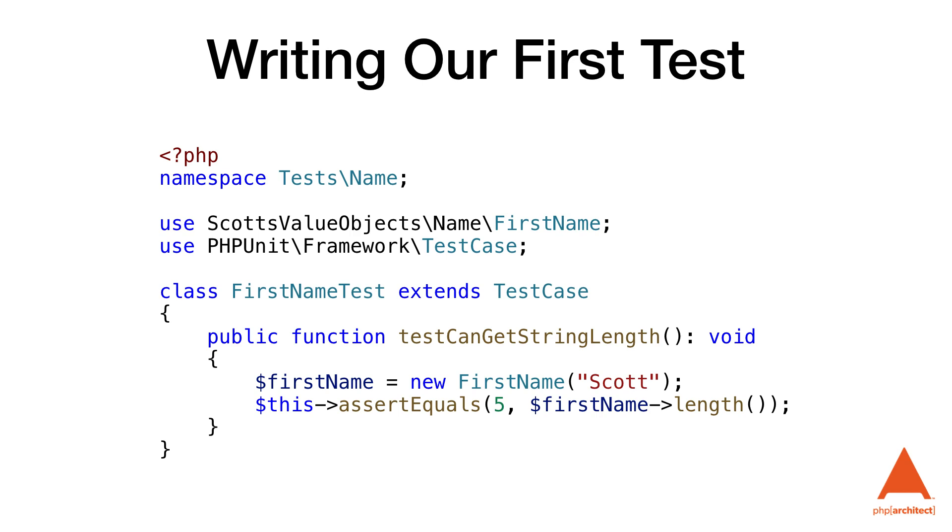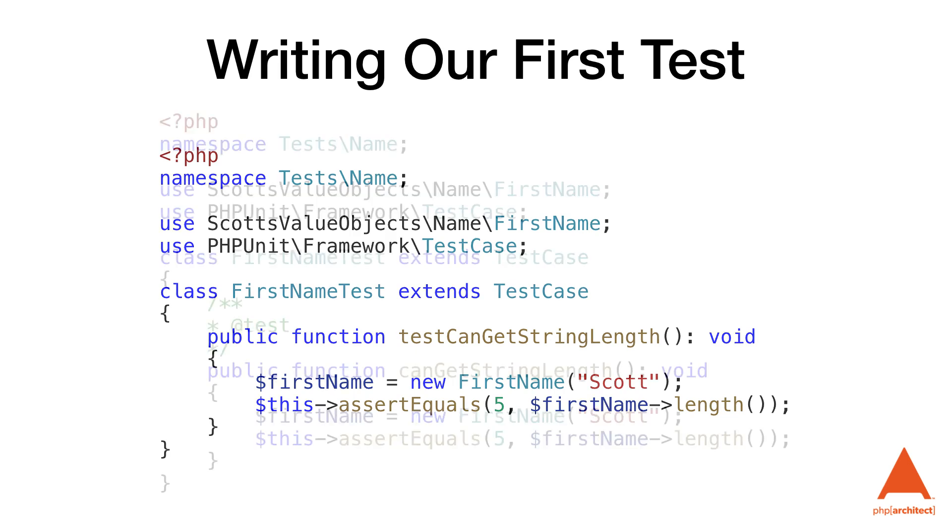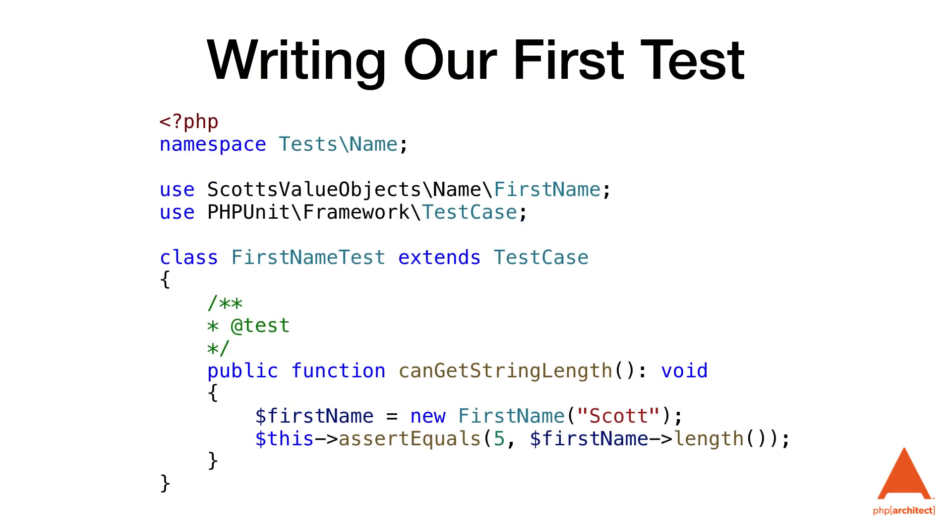Now that we've created our test class, we can start adding tests. In PHPUnit, individual tests are just public class methods. I highly recommend naming the function something that expresses the intent of what you're testing — try to make it read like a sentence. There are two ways to create functions PHPUnit will recognize as a test: name the method starting with the word 'test', or use the @test annotation in the doc block. Each test should call at least one assertion method — if we don't, PHPUnit will mark it as a risky test and, depending on settings, cause it to fail.